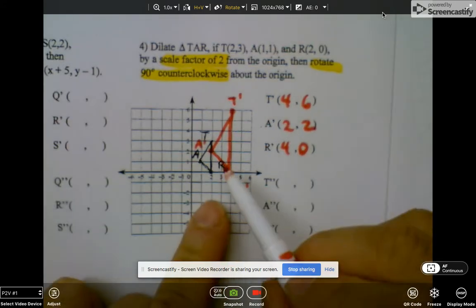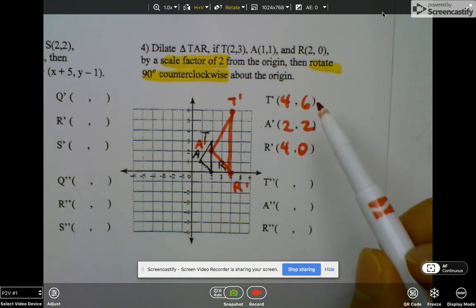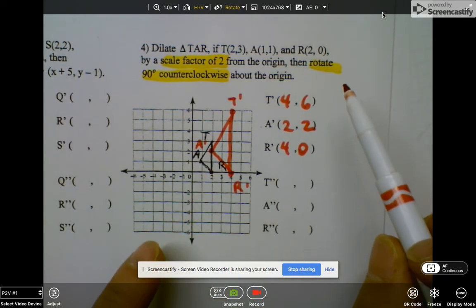So now you can tell that looks good because it's similar figures - they're not congruent but they're similar. And now the next thing I have to do is rotate by 90 degrees clockwise.